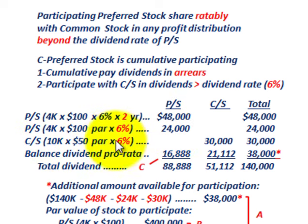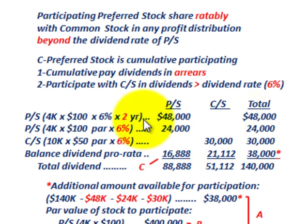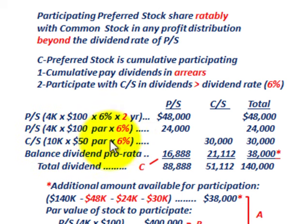Now the participating amount comes in. Common stock doesn't actually pay a dividend, but we use the preferred stock dividend rate for the arithmetic. For common stock: 10,000 shares at $50 par times the 6% dividend rate gives an allocation of $30,000. So far we've allocated: $48,000 arrears to preferred stock, $24,000 current year to preferred stock, and $30,000 to common stock based on the 6% rate.